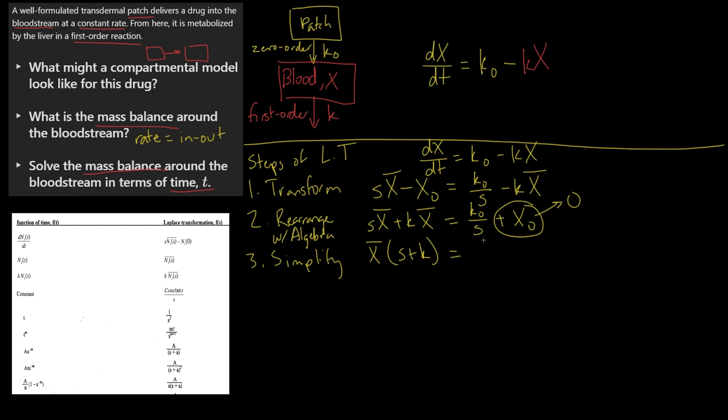So this gives us simply k₀/s on the right side. And we might as well move this s plus k to the denominator by dividing both sides. We get X̄ equals k₀ over s times (s plus k).